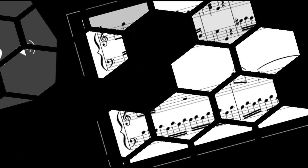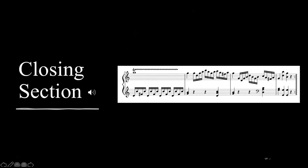Following the second theme area is the closing section. The closing section is easily identifiable as it is an extension of the final cadence. The purpose of this extension is to make the ending sound more final and complete. This extension prepares the ear for a secure conclusion in the key of G major. Closing sections can be found in most sonata form movements; however, it should be noted that a closing section is an optional composition technique and does not always appear.